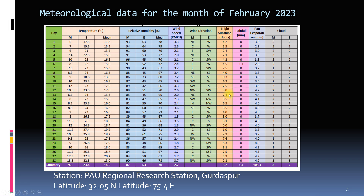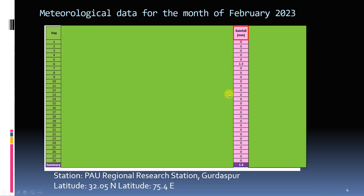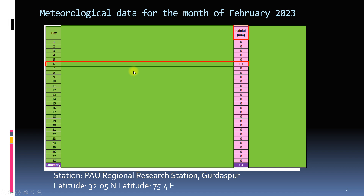We can focus on rainfall data. Here, 1.4 mm of rain occurred on one day, February 6th, 2023. For the rest of the month, there was no rain.